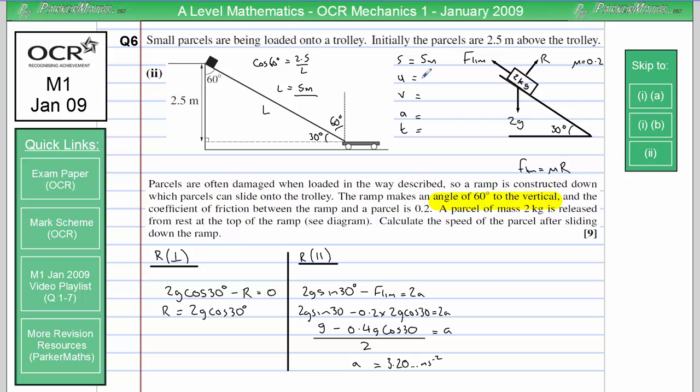My initial velocity is 0 metres per second. I don't yet know final velocity. Acceleration I worked out a minute ago. That was 3.20 and so on. And the time I don't know. So, I'm looking for an equation of motion that involves S, U, V and A. I need to use V squared equals U squared plus 2AS. U is 0, so that's going to disappear. I'm going to get 2 times 3.20 and so on, multiplied by 5.